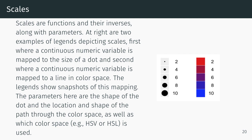Scales are functions and their inverses along with parameters. Here are two examples of legends depicting scales. The left one is an example of a continuous numeric variable mapped to the size of a dot. The one on the right has a continuous numeric variable mapped to a line in color space. The legends show snapshots of this mapping. The parameters are the shape of the dot and the location and shape of the path through color space.